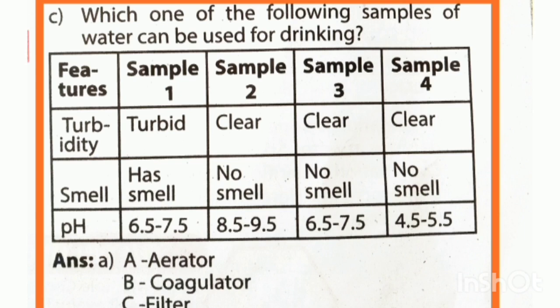What is the pH level for drinking water? The acceptable pH level is 6.5 to 7.5. The correct answer is sample 3.